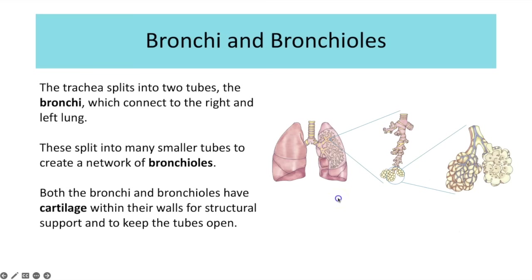The bronchi and bronchioles are the next structures to be familiar with. The trachea splits into two tubes called the bronchi — singular bronchus — connecting to the right and left lungs. Those split further into smaller tubes called bronchioles, and at the end of the bronchioles we have the alveoli. Both bronchi and bronchioles have cartilage within their walls to provide structural support and keep those tubes open.